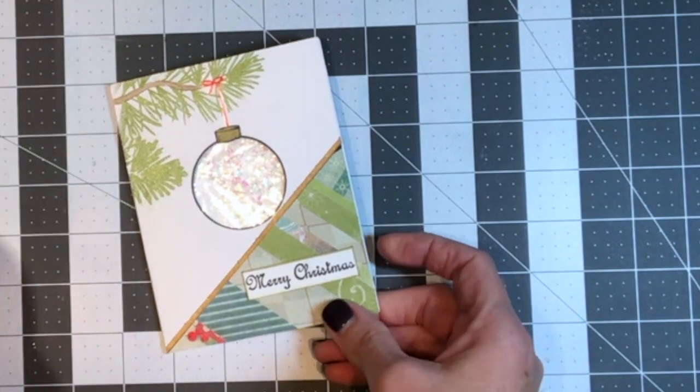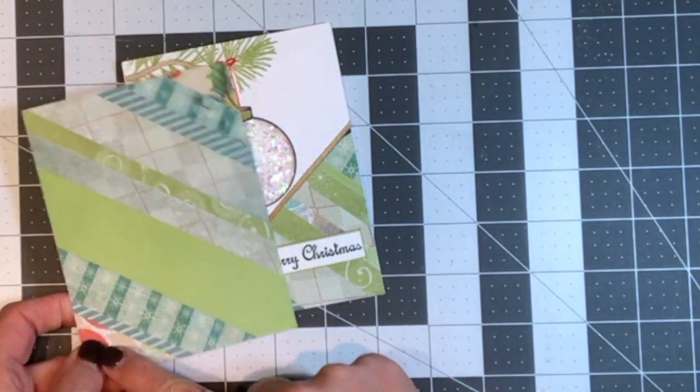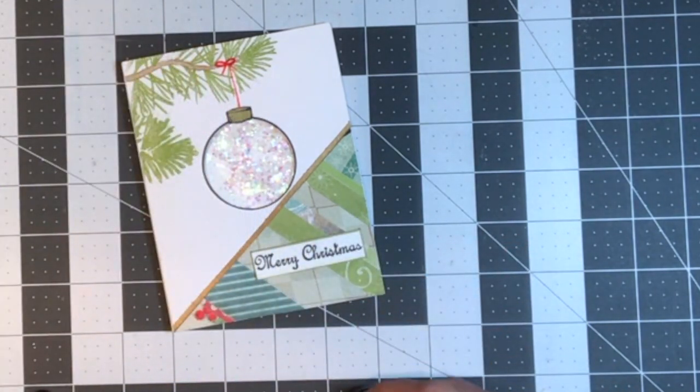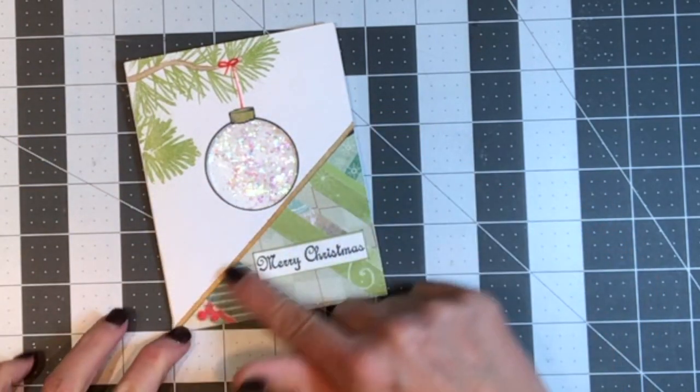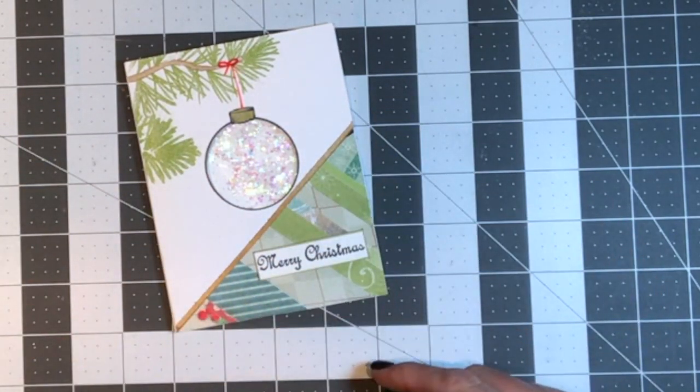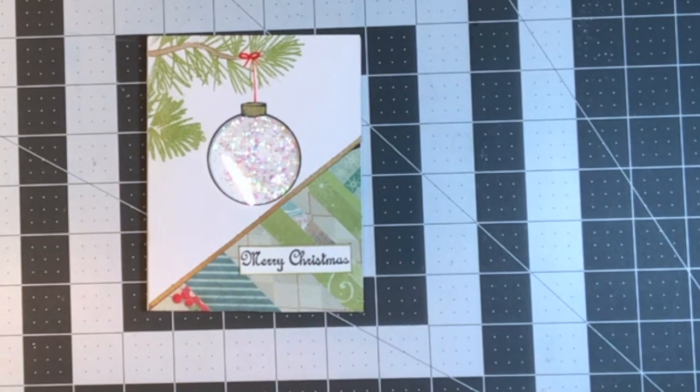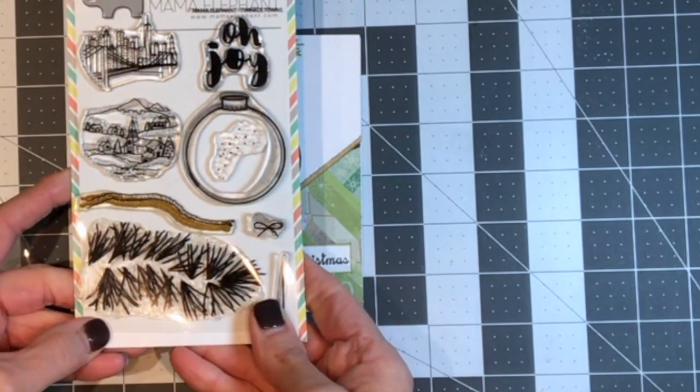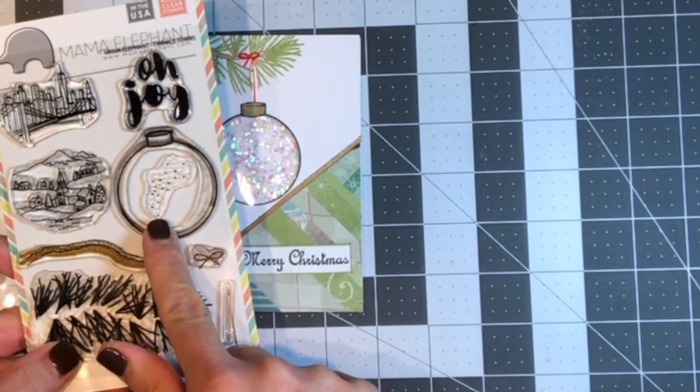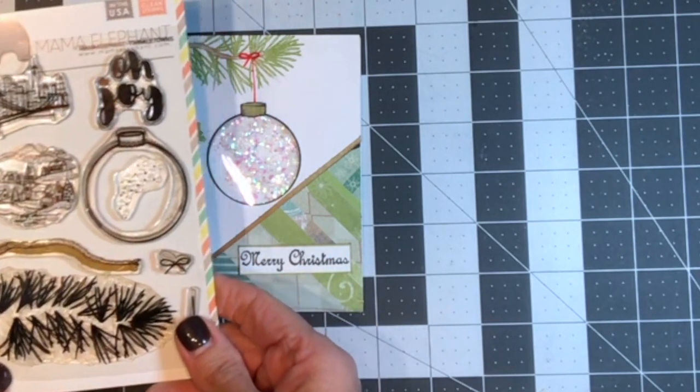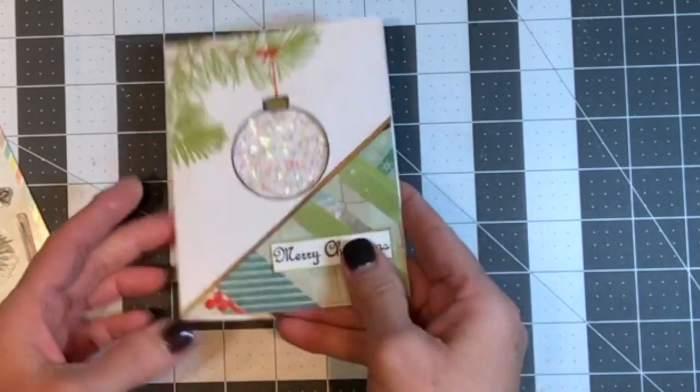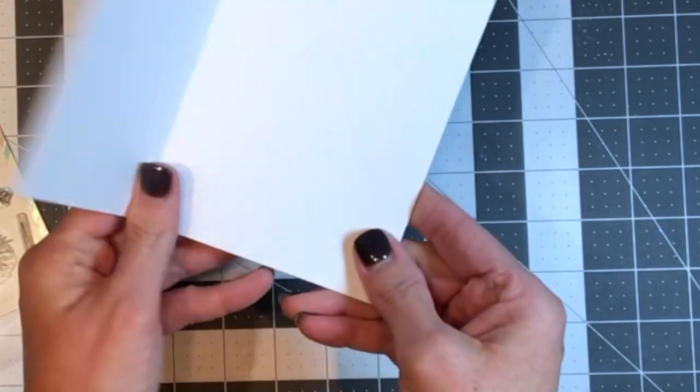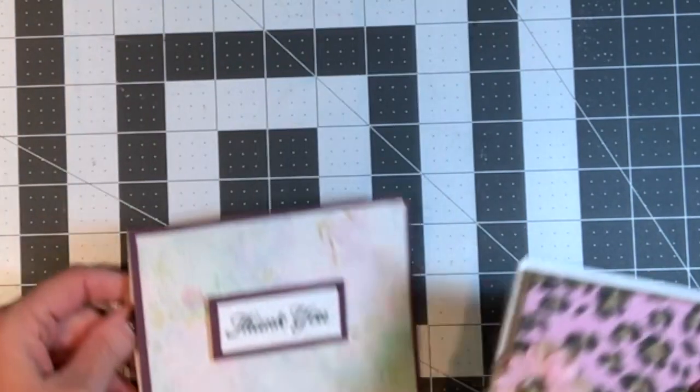I used a little bit of gold metallic paper to create an edge there along the other edge of that. And then I used the sweet little Christmas set from Mama Elephant. I've used it several times. I used the Christmas ball and the tree branch from this set. And I stamped the Christmas ball on the card and then used some of my circle nesting dies to cut out a circle and turn it into a shaker card.